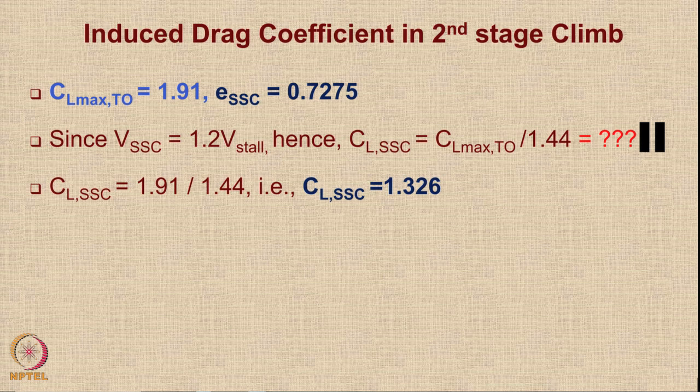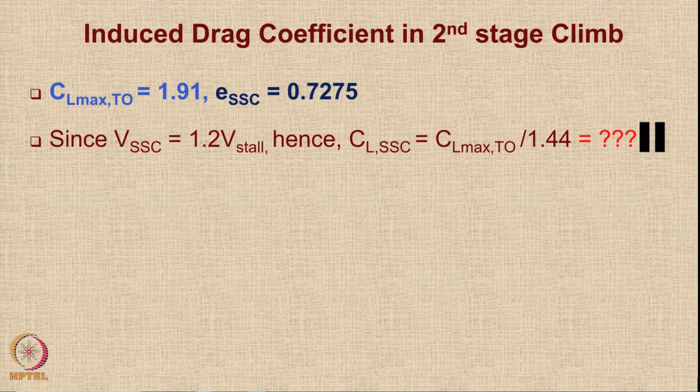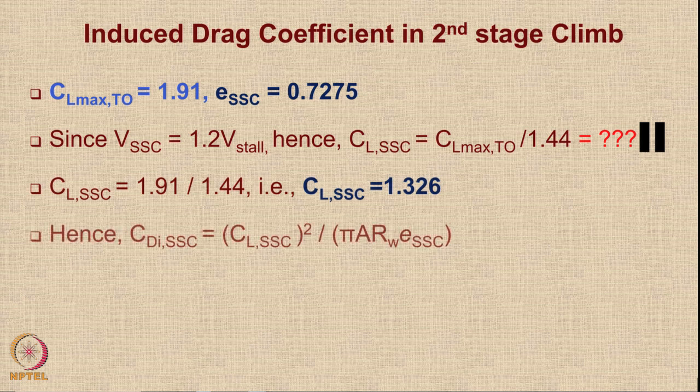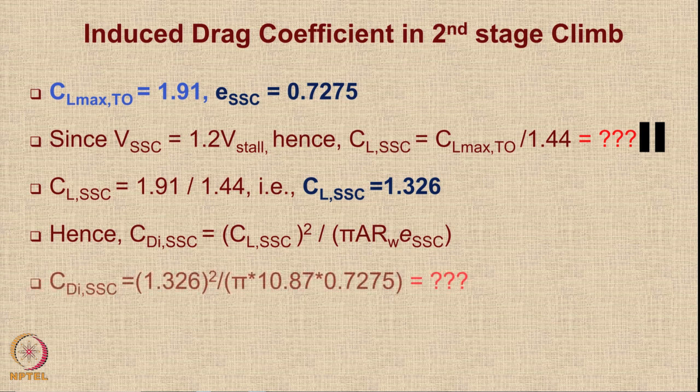Please pause the video whenever you see two vertical lines and do the calculations yourself — otherwise you will simply nod along and not truly learn the procedure. Once you know CL_SSC, you can get CDI = CL²/(π × A × E). All values are now known, so pause and calculate CDI_SSC. The value comes out to be 0.0708.